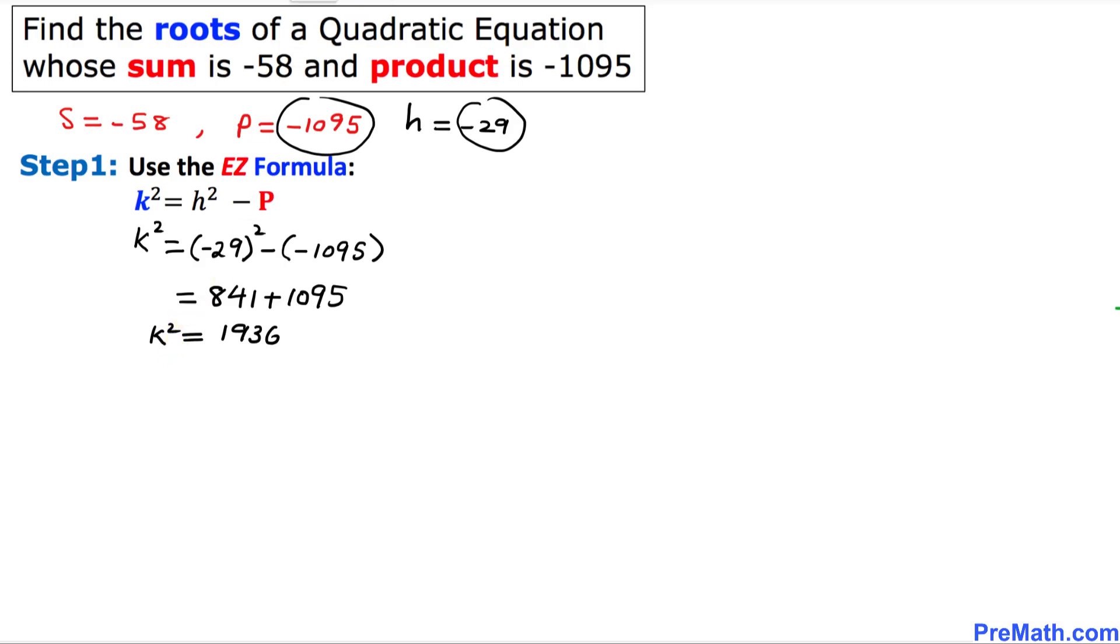So we can undo this square by taking the square root on both sides. So this square and square root cancel out. So K turns out to be, if we take the square root of this, that is going to give us positive or negative 44.